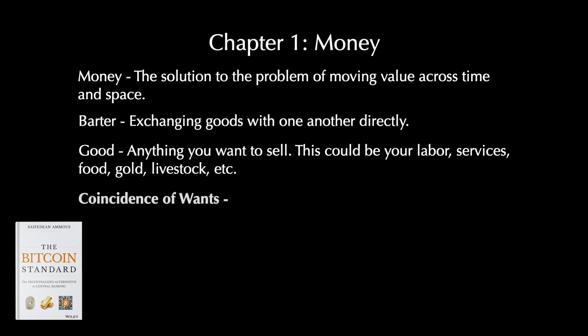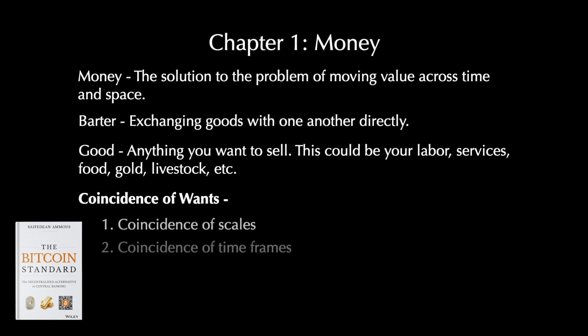The problem of Coincidence of Wants can be broken into three subcategories: Coincidence of Scales, Coincidence of Timeframes, and Coincidence of Location. In other words, it will become less and less likely that you will meet a person who coincidentally wants what you have to offer in exactly the amount you want to sell, at precisely the time and location you want to sell it.